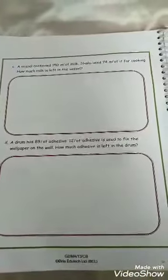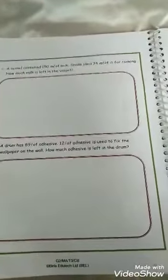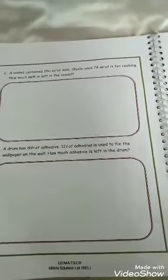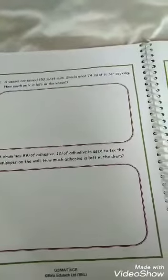Now the D part: a drum has 89 liter of adhesive. 12 liter of adhesive is used to fix the wallpaper on the wall. How much adhesive is left in the drum? The word 'left' is here. That means we have to subtract. The total adhesive is 89 liter and we have to subtract 12 liter of adhesive which is used to fix wallpaper on the wall. So we can subtract it directly.